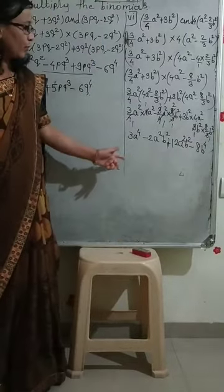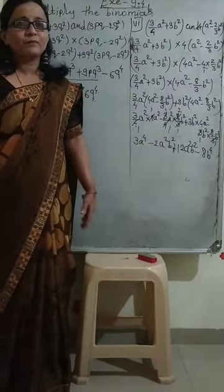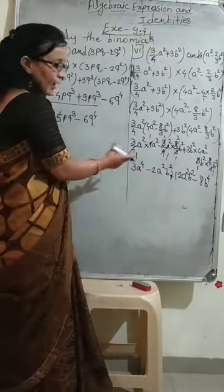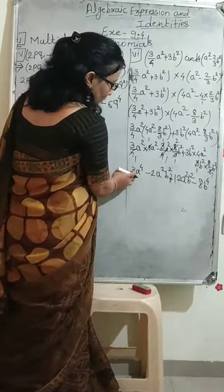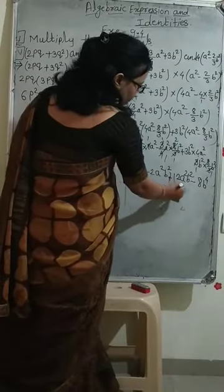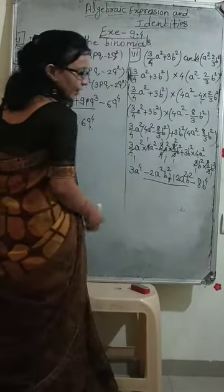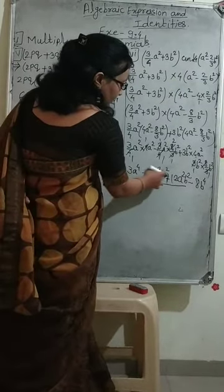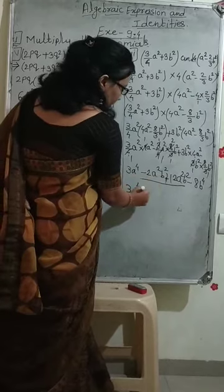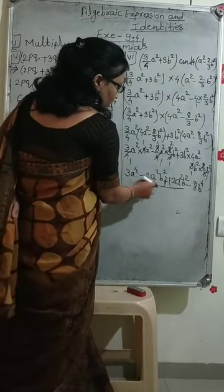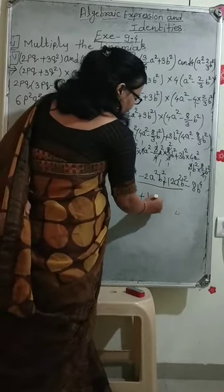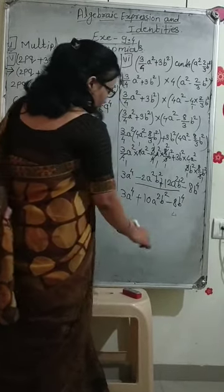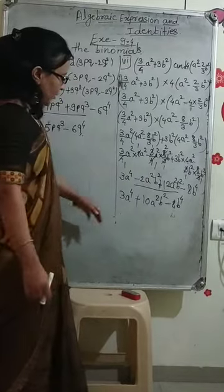Now we check for like terms. We have minus 2A²B² and plus 12A²B² — these are like terms. So: 3A⁴ stays as it is. For the like terms: plus minus gives minus, bigger number sign is plus, so 12 minus 2 gives 10A²B². And minus 8B⁴. Therefore the answer is: 3A⁴ + 10A²B² − 8B⁴.